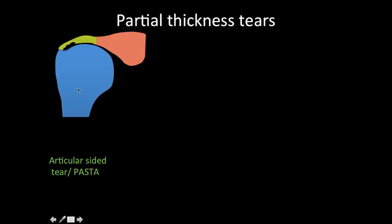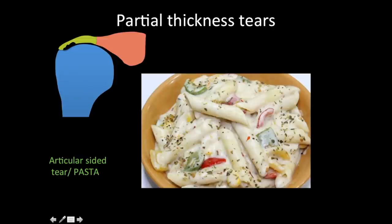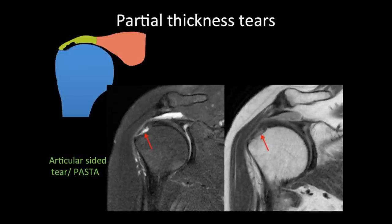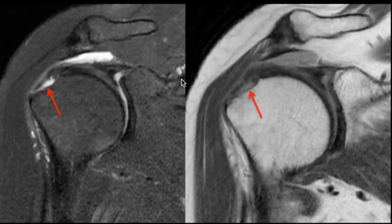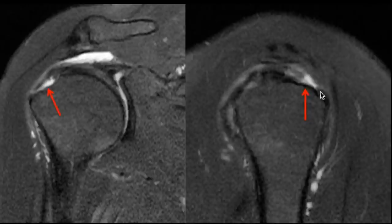This is also called PASTA — partial articular surface tendon avulsion. You do not need to mention the term PASTA in your report; what is more important is to describe the tear. For example, this patient has an approximately 75% thickness partial articular sided tear at the supraspinatus enthesis, with some bursal fibers still intact. On the sagittal image you can also identify the anterior-posterior dimension of the tear.